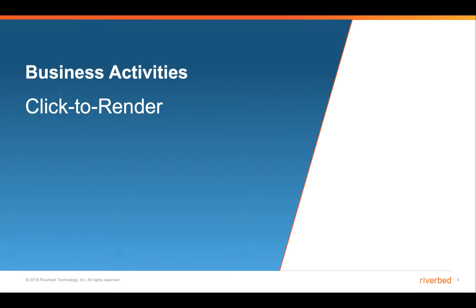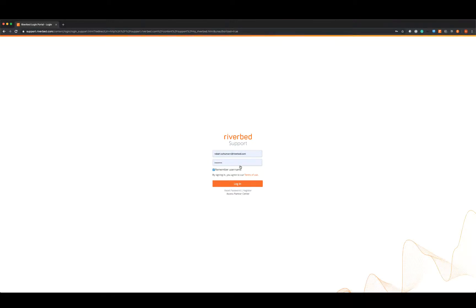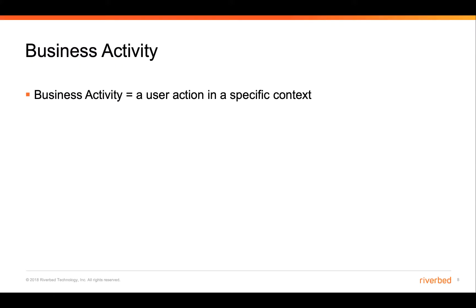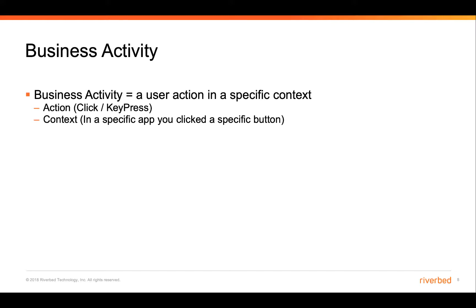Let's talk more about business activities and what they're able to do with monitoring click-to-render performance. When I say click-to-render, what I mean is the action the user takes — a click — and then the result of that click. Specifically, a business activity is a user action in a specific context. An action can be a click or a key press. The context is in a specific app where you've clicked on a specific button — this could be thick client or web-based. And then the action result: something changed as a result of the action you took in a certain context.